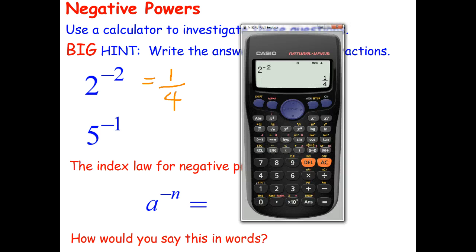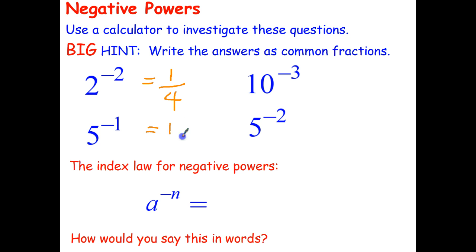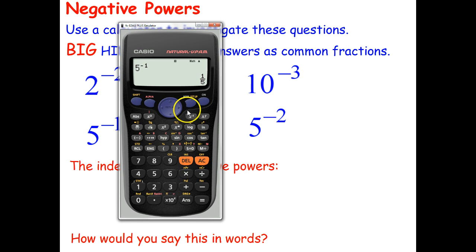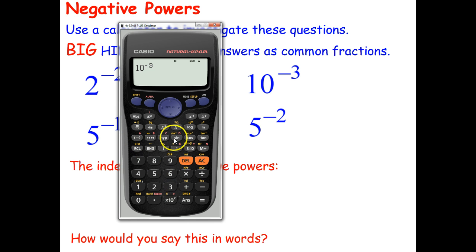Let's see if we can find a pattern to all of this. Let's try 5 to the negative 1. 5 raised to the negative 1 gives 0.2, or as a fraction 1 fifth. We'll do one more and look for a pattern, then test it on the last question. 10 raised to the power of negative 3 gives, as a fraction, 1 over a thousand.